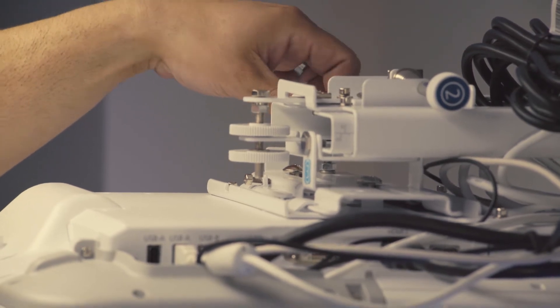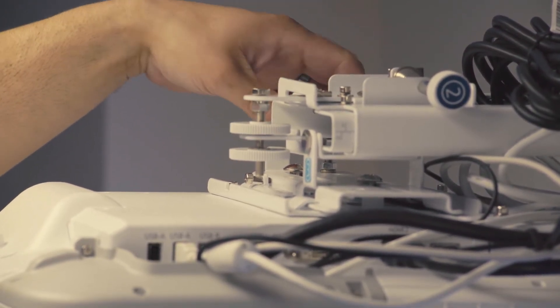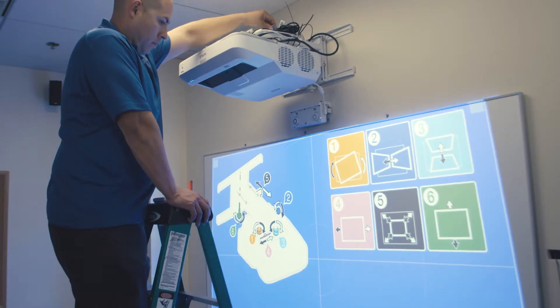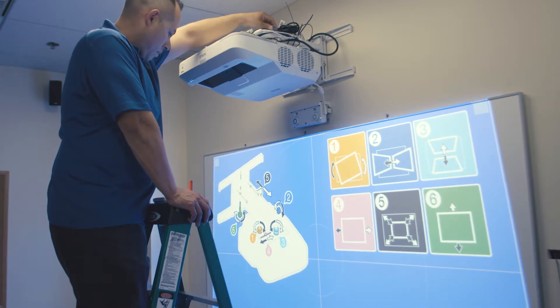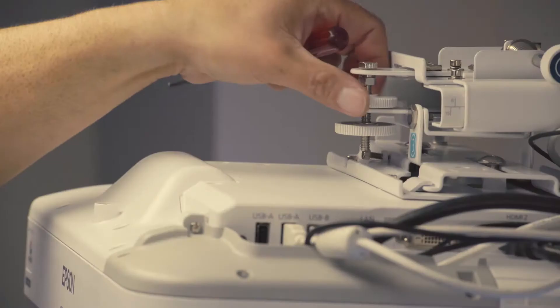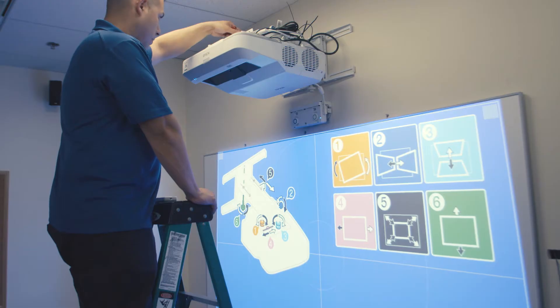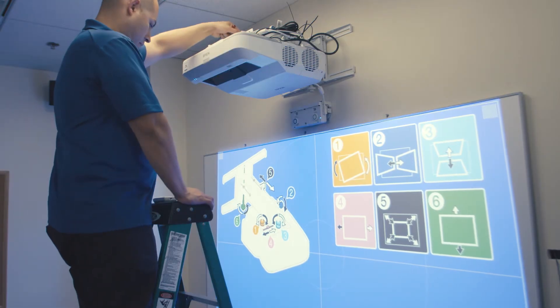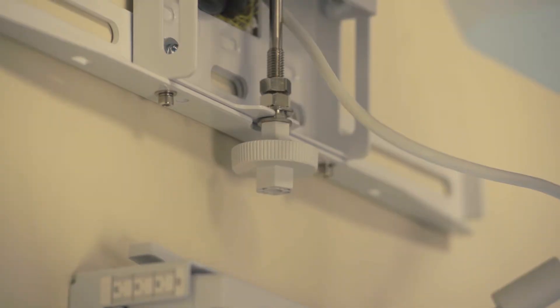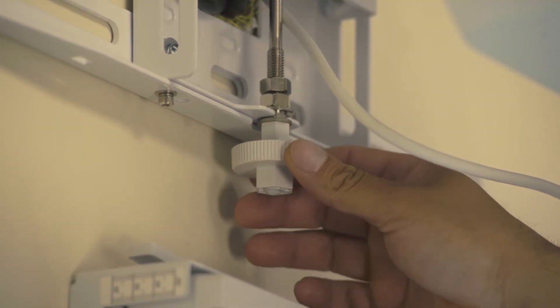Adjustment dial labeled number one controls the horizontal roll of the projector. Dial number two adjusts the yaw or horizontal keystone. And dials labeled number three adjust the pitch or vertical keystone. The long adjustment screw can also be used to raise or lower the projector arm as needed.